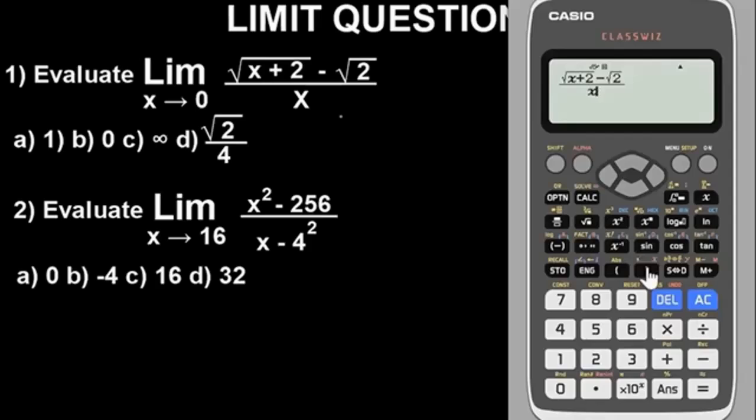Having done this, let's press equal and check what we have as the answer. Very simple. Press equal. We have 0.35. Option A says 1—no. Option B is 0—not the answer. Option C is infinity—not the answer. The answer has to be option D.